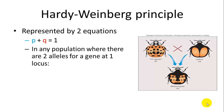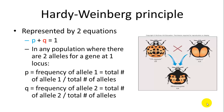The Hardy-Weinberg principle is represented by two equations. The first, P plus Q equals one: if you have two alleles for a gene at one locus, P represents the frequency of allele one and Q represents the frequency of allele two. Heterozygotes have one of each allele, while homozygous dominant and homozygous recessive individuals have two of each of their respective alleles.